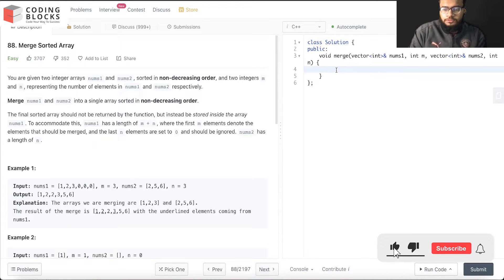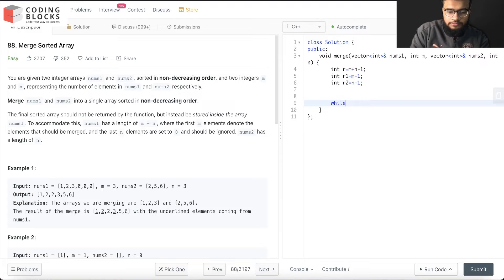We'll first declare integer r that is m plus n minus 1. We'll declare integer r1 that is m minus 1. We'll declare integer r2 that is n minus 1, and we'll traverse through the while loop.